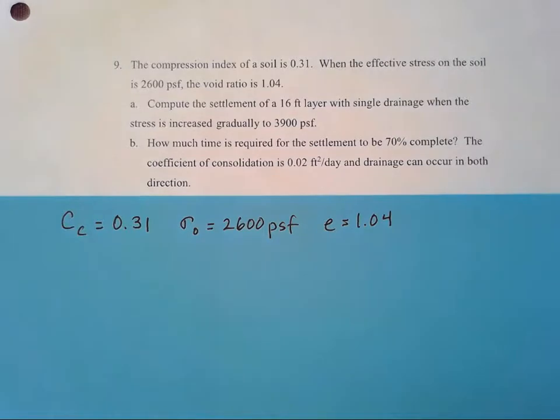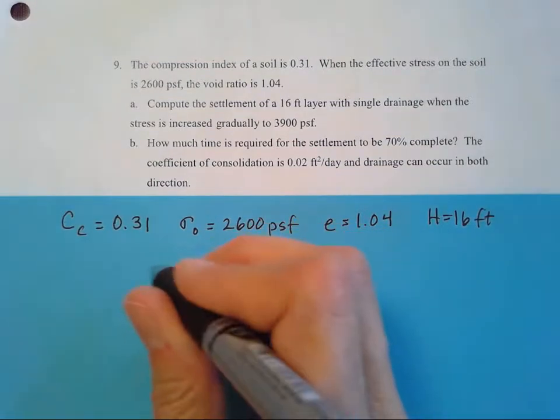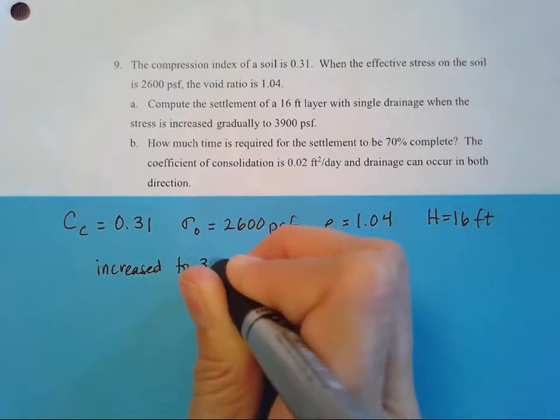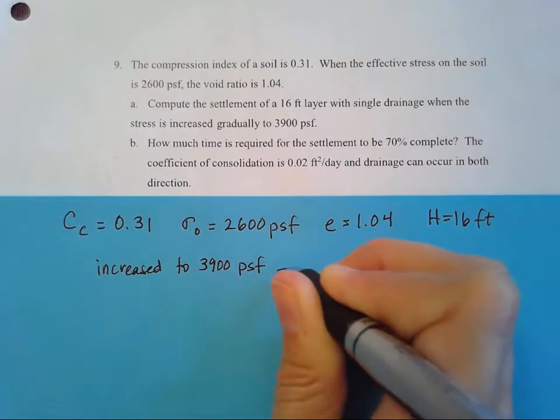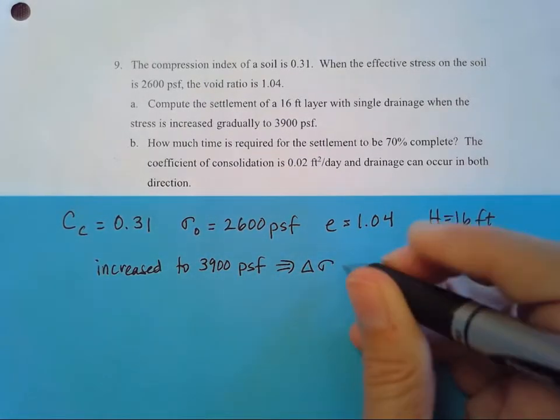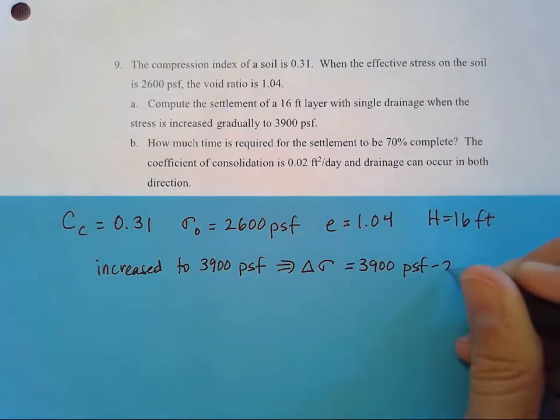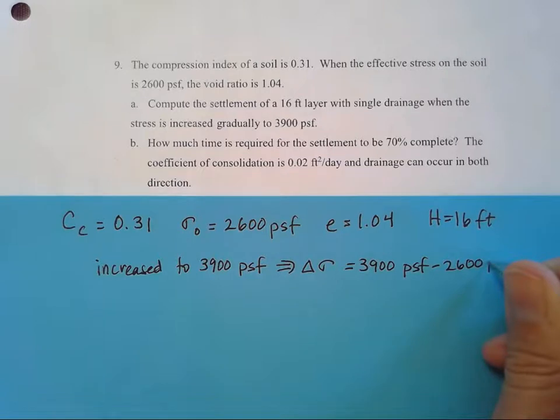We want to compute the settlement of a 16-foot layer. So it's 16 feet with single drainage, so it just stays at 16 feet. We're increasing the stress gradually to 3,900 PSF. So my total stress is going to be increased to 3,900 PSF. To find my delta sigma, I'm going to have to take that 3,900 PSF and subtract what I started with at 2,600 PSF. So that's a trick to this problem.